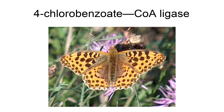Its three substrates are 4-chlorobenzoate, CoA, and ATP, whereas its three products are 4-chlorobenzoyl-CoA, AMP, and diphosphate.